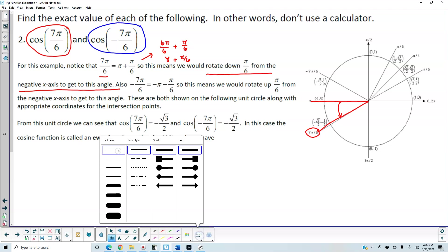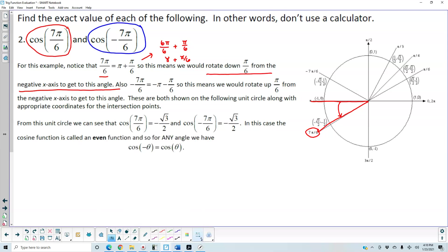Next, we want to find negative 7π over 6. Well, very similar to the previous one, we have negative π minus negative π over 6. So this means we have to rotate up from the negative x-axis to get the angle.